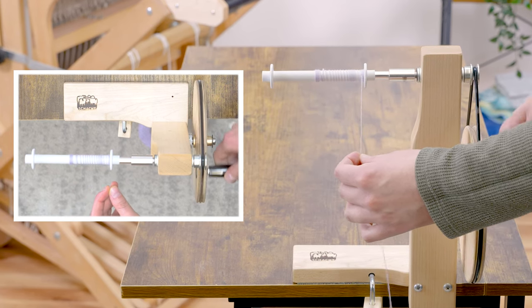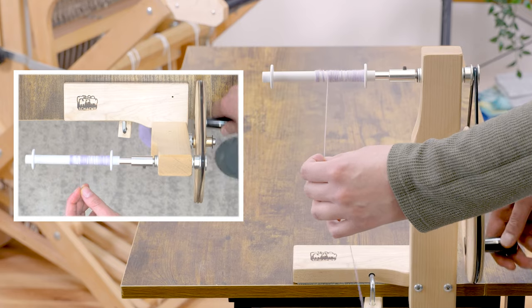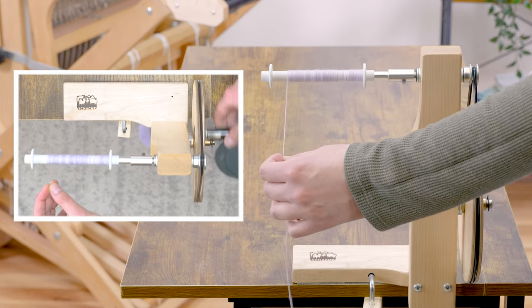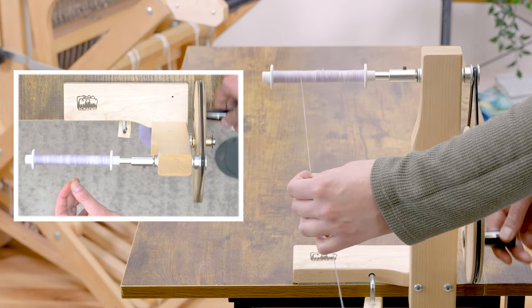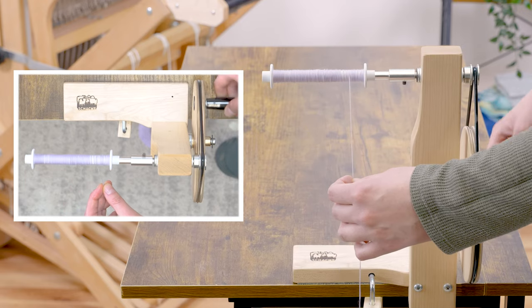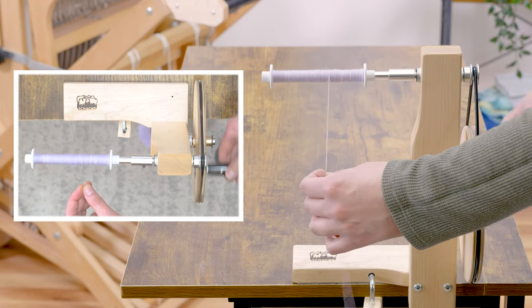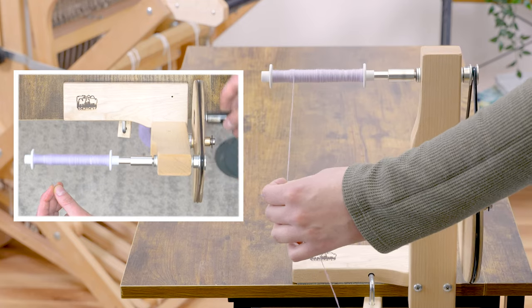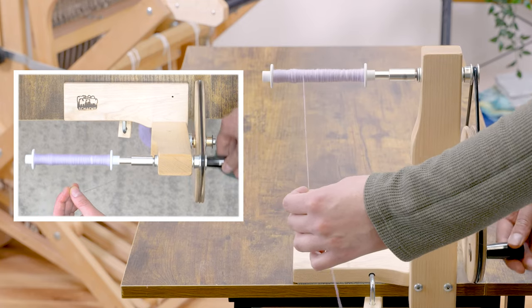Then pull with a bit more tension and move the yarn back and forth across the bobbin filling it evenly. Try to avoid any major peaks or valleys in the yarn. This sometimes happens the first few times but you'll get better.